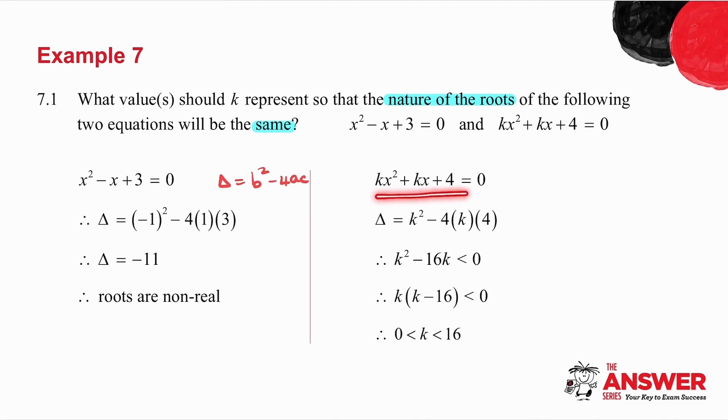So I take the second equation and work out delta from that. And I get k squared minus 16k, and delta must also be less than 0, because the nature of the roots must be the same.